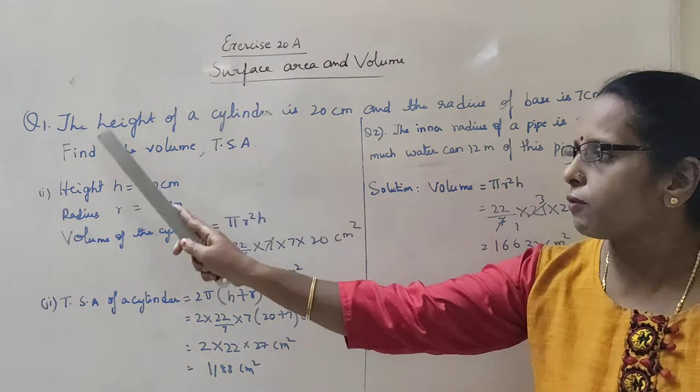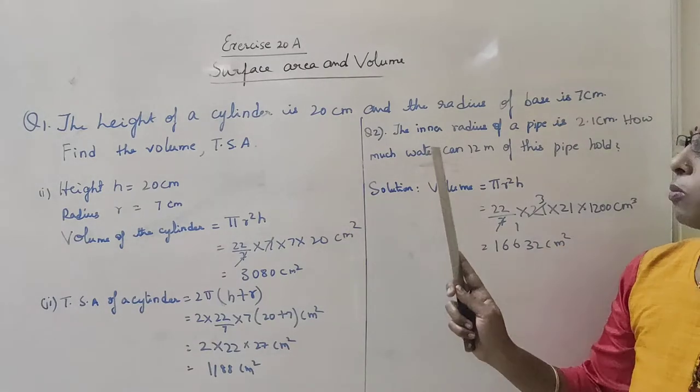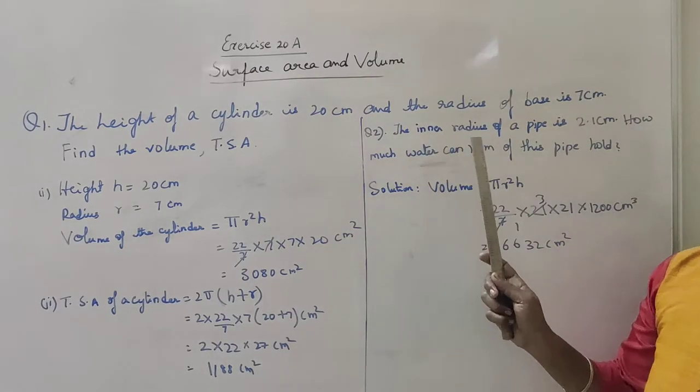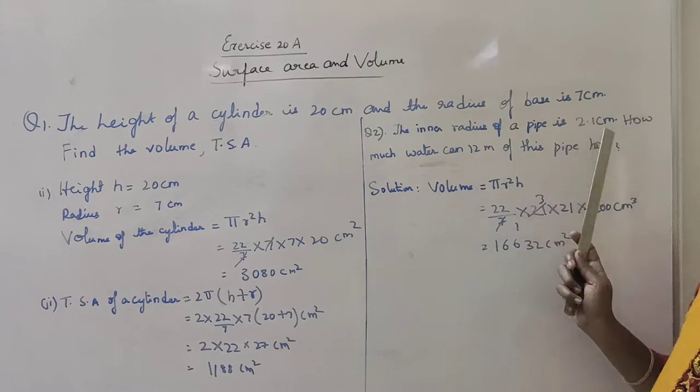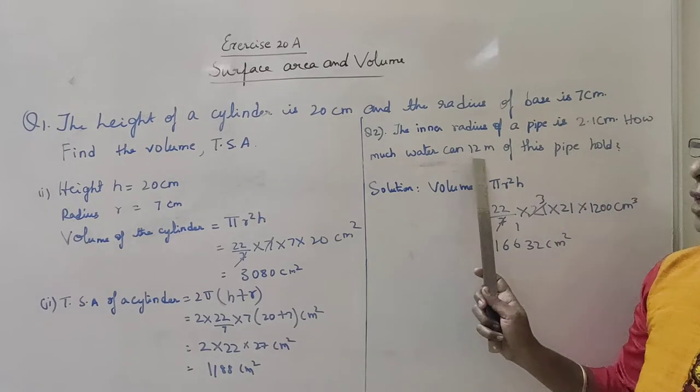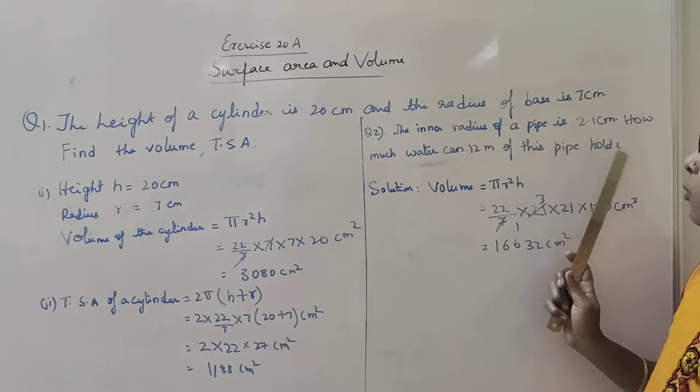So we are done with the first sum. Now let us move on to the second sum. The inner radius of the pipe is 2.1 cm. How much water can 12 cm of this pipe hold?